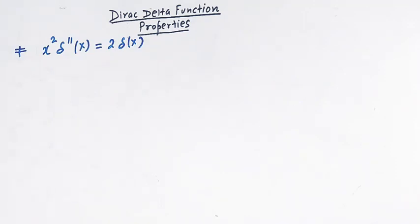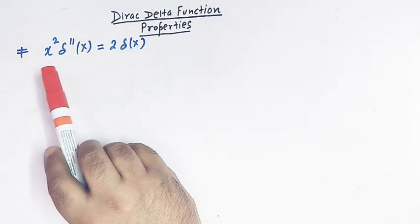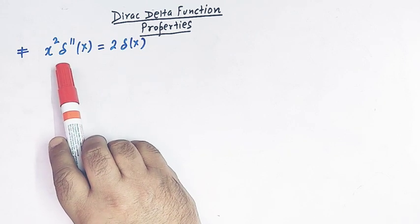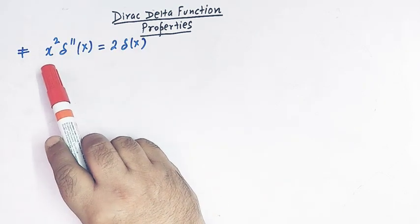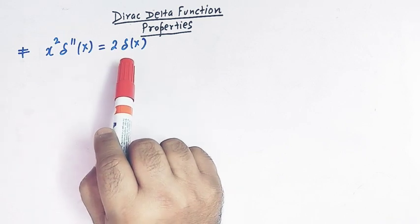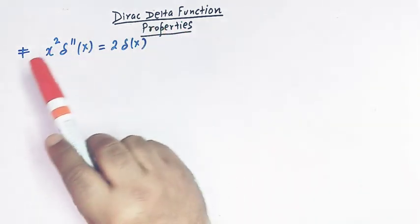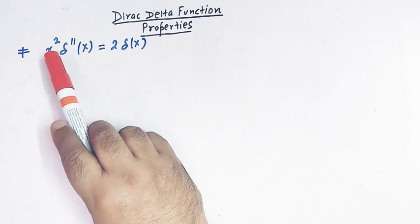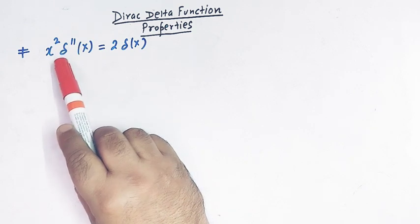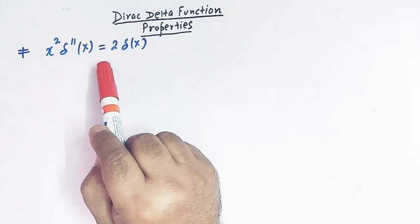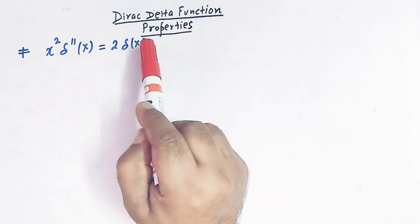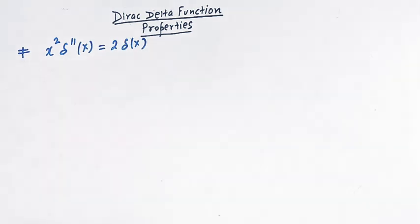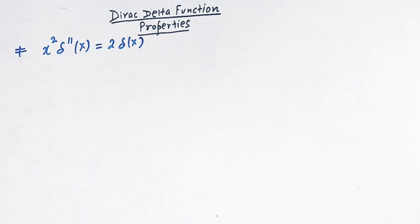Hello viewers. In today's class we are going to discuss one important property connecting the Dirac delta function with its derivative. In this lecture we will prove this important property of the Dirac delta function: that x squared times the second derivative of the Dirac delta function is equal to two times the Dirac delta function itself. So let us start.